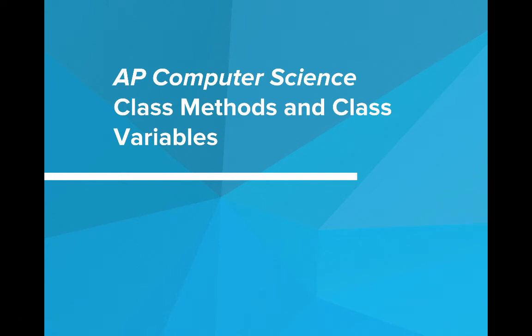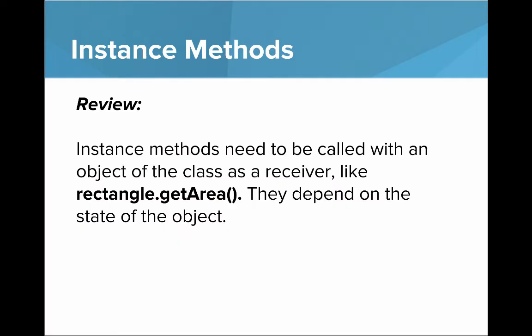In this video we're going to talk about class methods and class variables. Let's do a little review on instance methods. Instance methods need to be called with an object of the class as a receiver, like rectangle.getArea, where rectangle is an instance of the rectangle class. They depend on the state of the object.